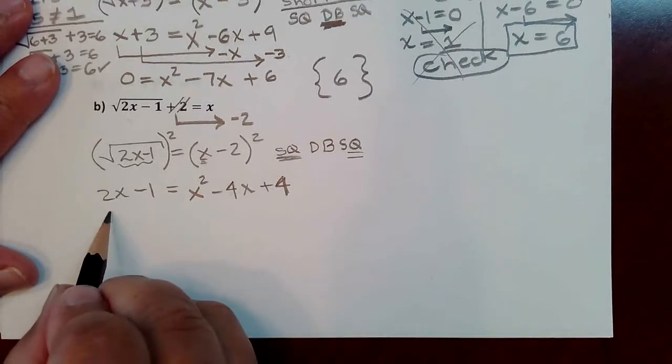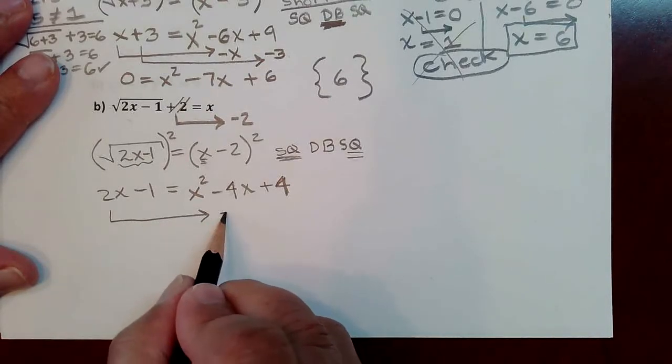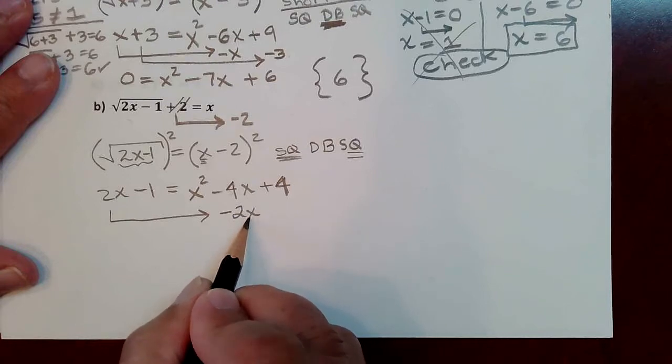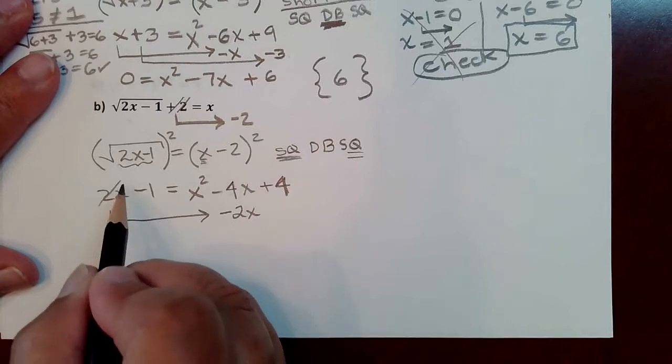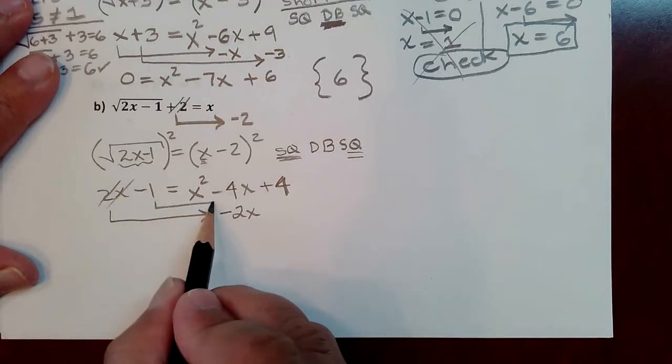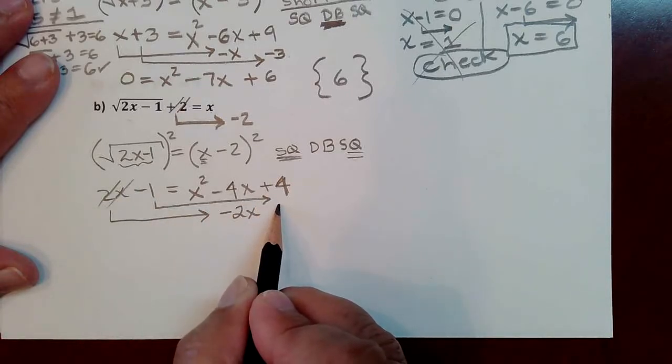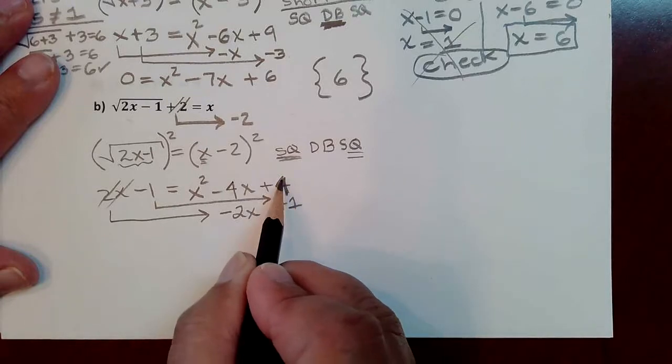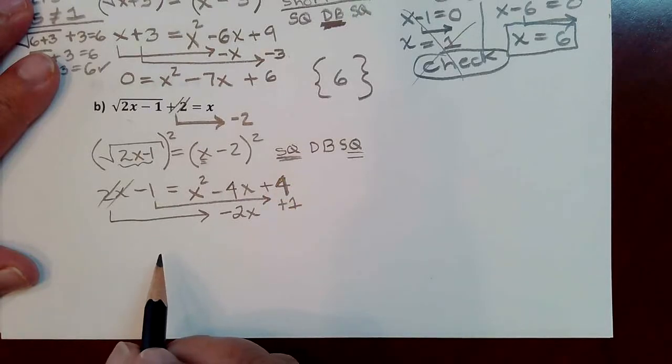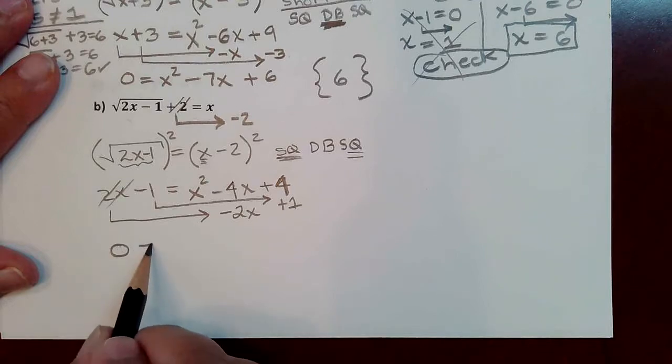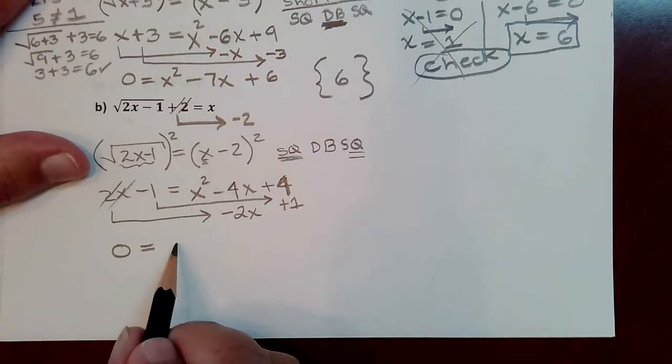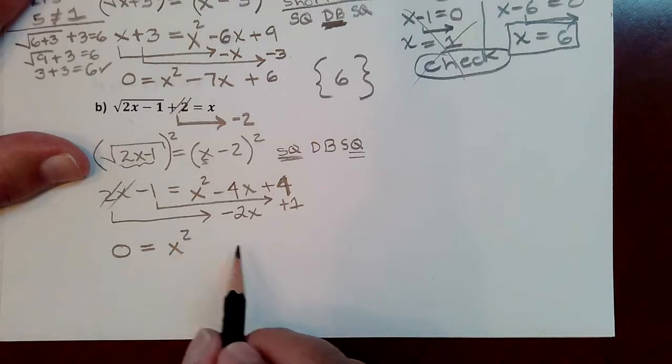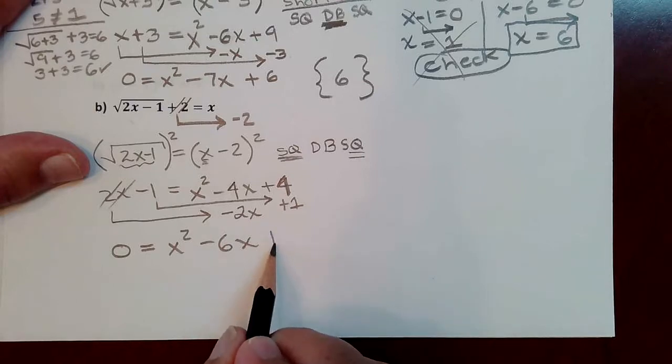Now you've got the foiling done on the right hand side. Bring everything to one side so that you can decide how you're going to go about solving this. Positive 2x becomes negative 2x when it jumps to the other side, just as negative 1 becomes positive 1 when it jumps to the other side. It takes on the opposite sign. So then there's nothing on the left hand side. You've brought this into general form by zeroing it out, while on the right hand side, there's x squared. These two combined is negative 6x. 4 and 1 combined is 5.